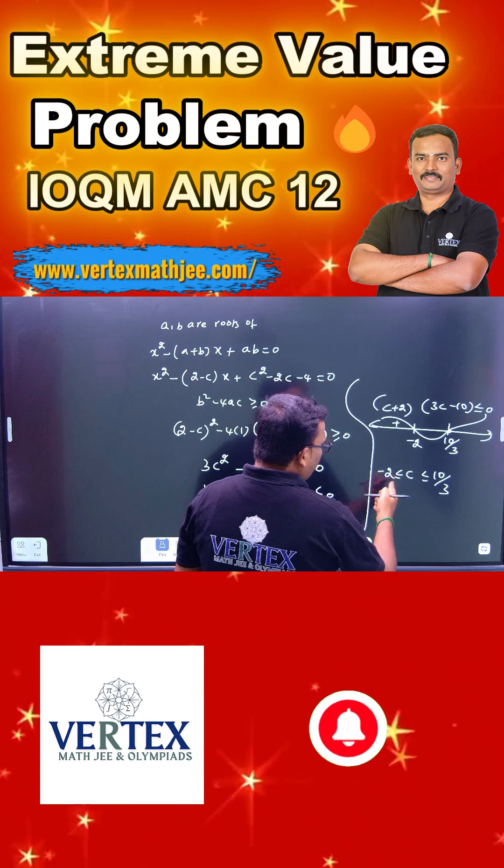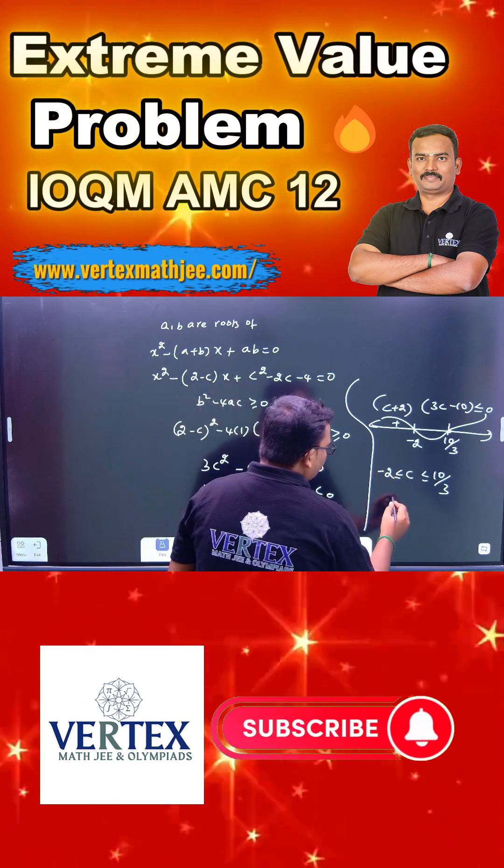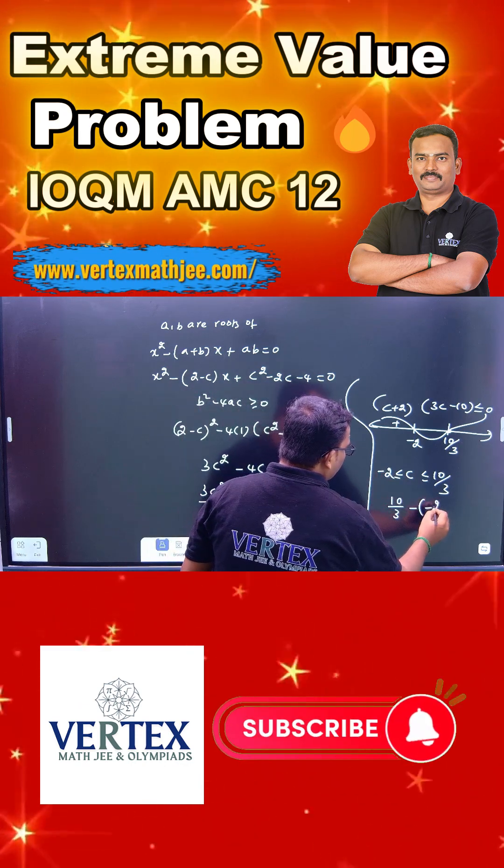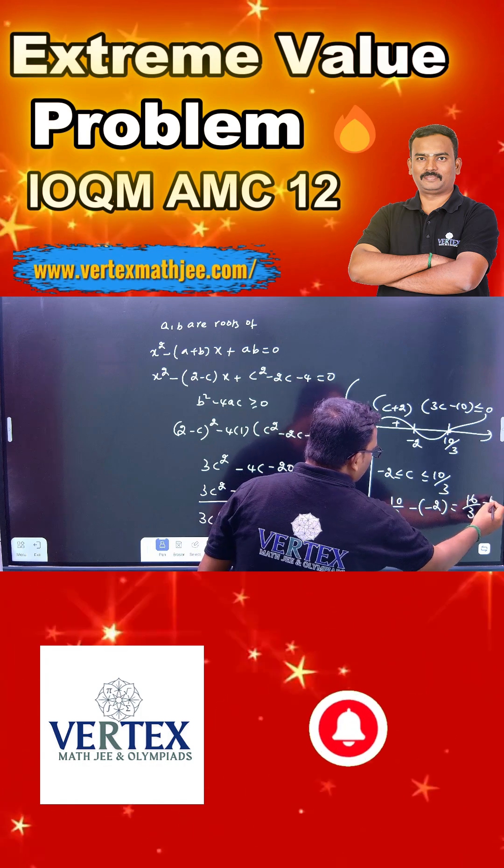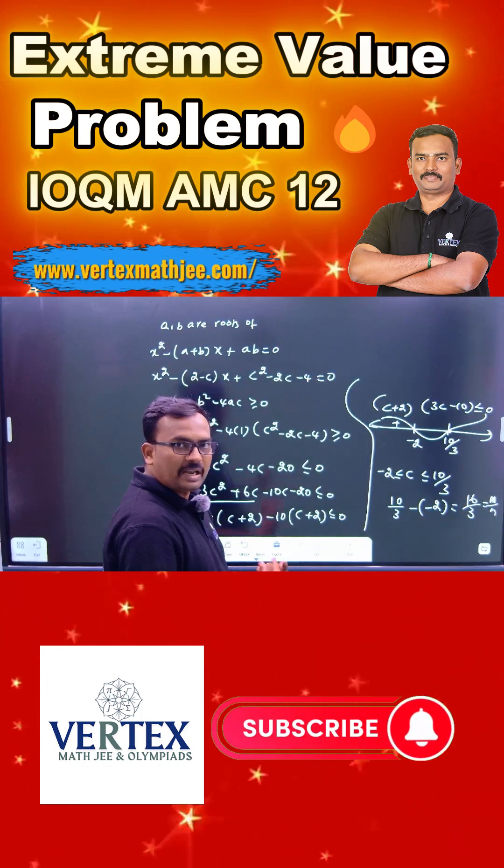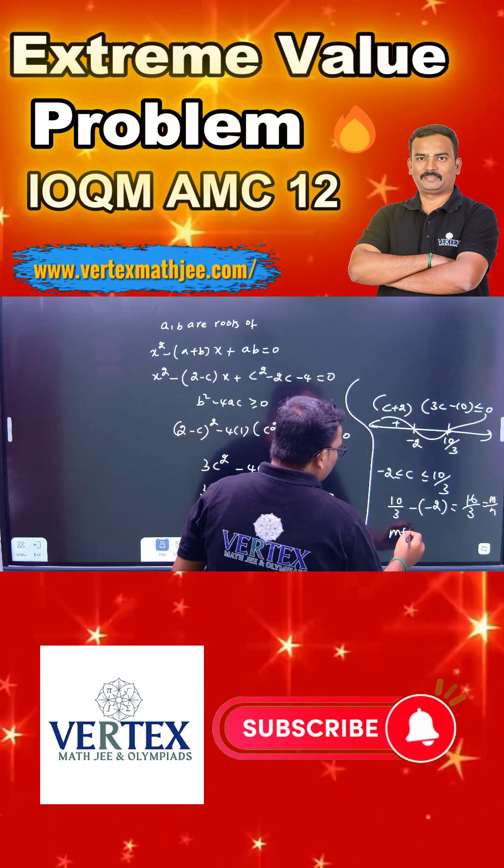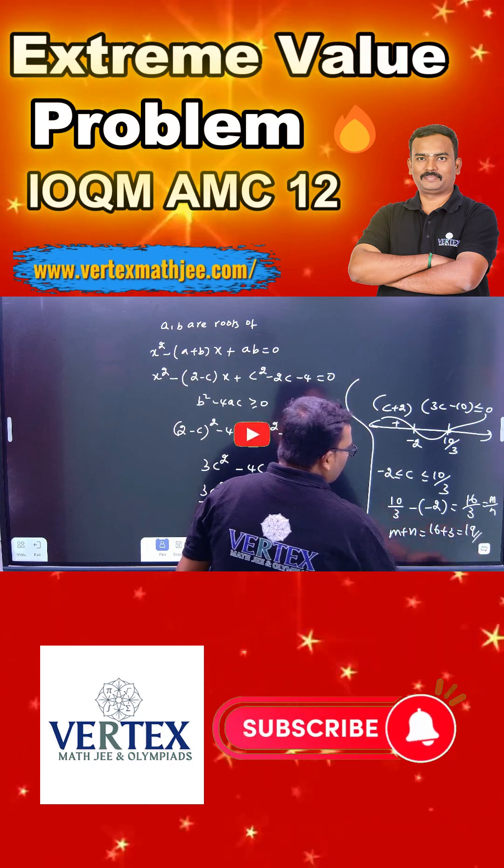What is the maximum value here? 10 by 3. Minimum value is minus 2. What is the difference here? 10 by 3 minus of minus 2. That is 16 by 3. This is equal to m by n. m and n are relatively prime. Therefore, m plus n equals 16 plus 3. It is 19, your answer.